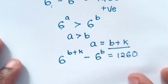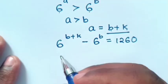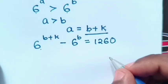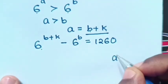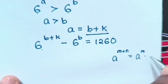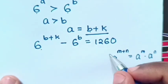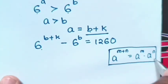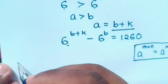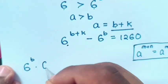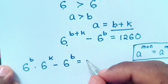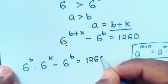Then, next step, from this exponent in addition of powers, we apply rule that a power m plus n is equal to a power m times a power n. Then, here will be multiplication of exponent: 6 power b times 6 power k minus 6 power b is equal to 1260.